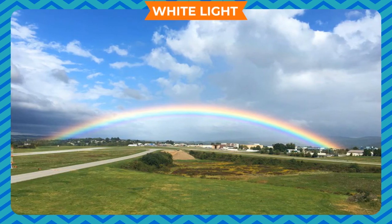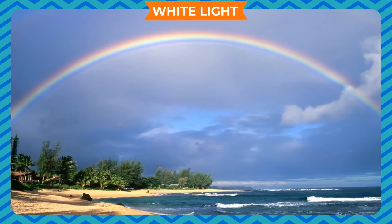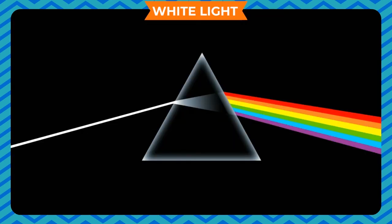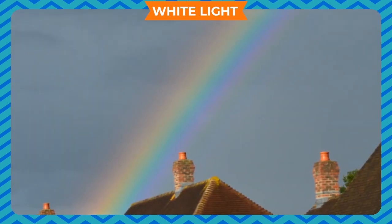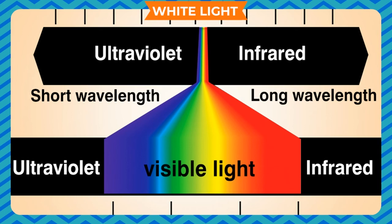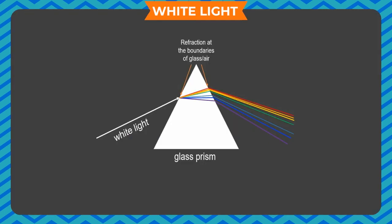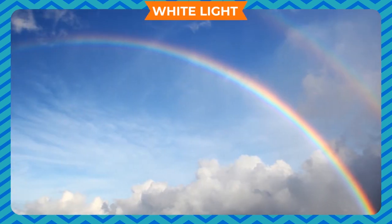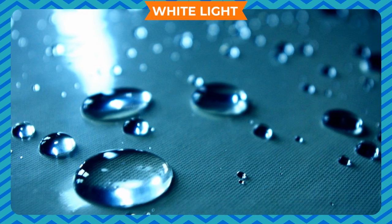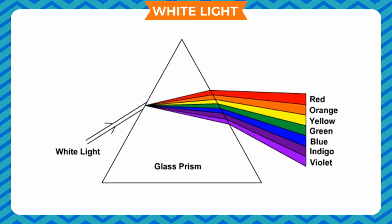White light: All of us enjoy the sight of a rainbow — a band of seven colours: violet, indigo, blue, green, yellow, orange and red. When white light falls on a prism, it splits into this band of seven colours called the spectrum. Sir Isaac Newton performed this experiment and named these seven colours as the spectrum. The phenomenon of breaking of white light into seven colours is called dispersion. Rainbow also occurs due to dispersion — the droplets of rain water act as prisms, dispersing white light into seven colours.